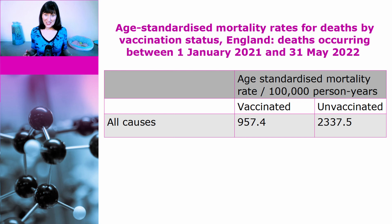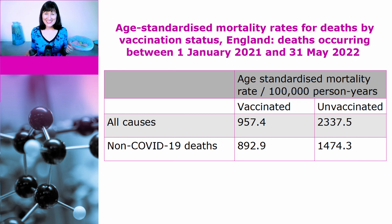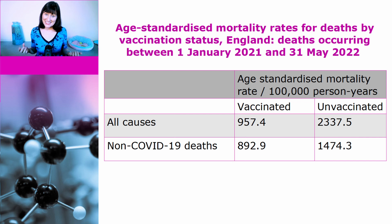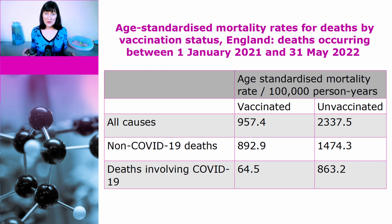So let's have a look at non-COVID mortality. The age-standardised mortality rate is 892.9 per 100,000 person years for the vaccinated, compared with 1,474.3 for the unvaccinated. So even when we are just looking at non-COVID deaths, the unvaccinated are still more likely to die — the exact opposite of what you would expect if vaccines were leading to excess mortality. For completeness, the mortality rates for deaths involving COVID are considerably higher in the unvaccinated at 863.2 per 100,000 person years, compared with 64.5 for the vaccinated.